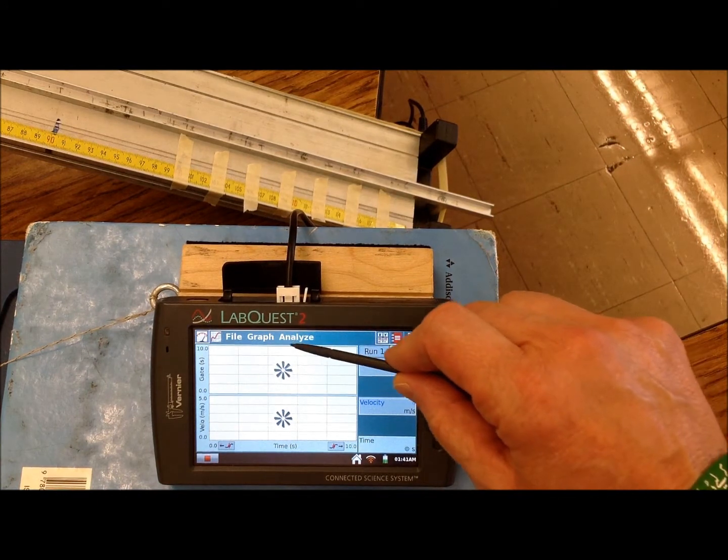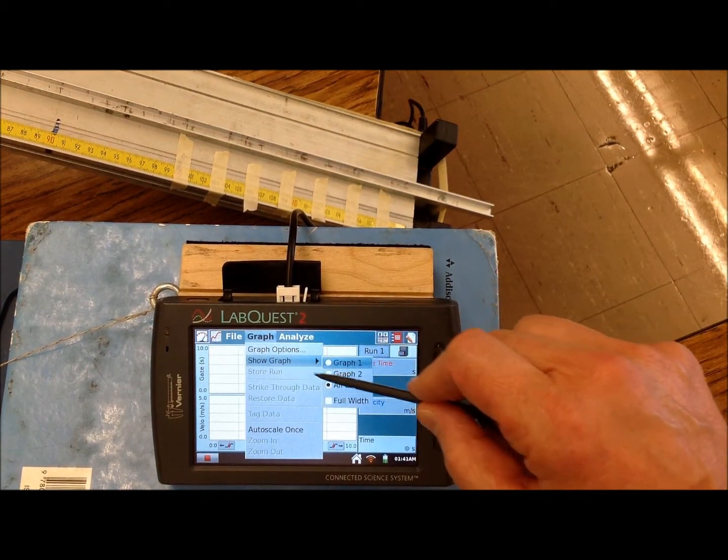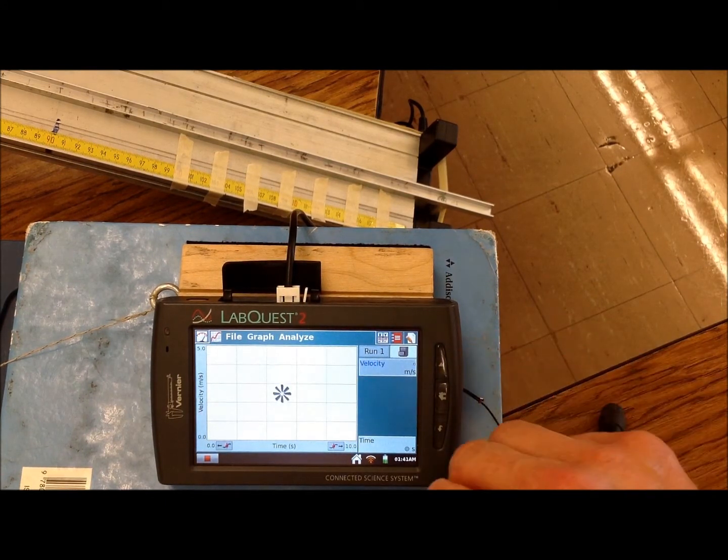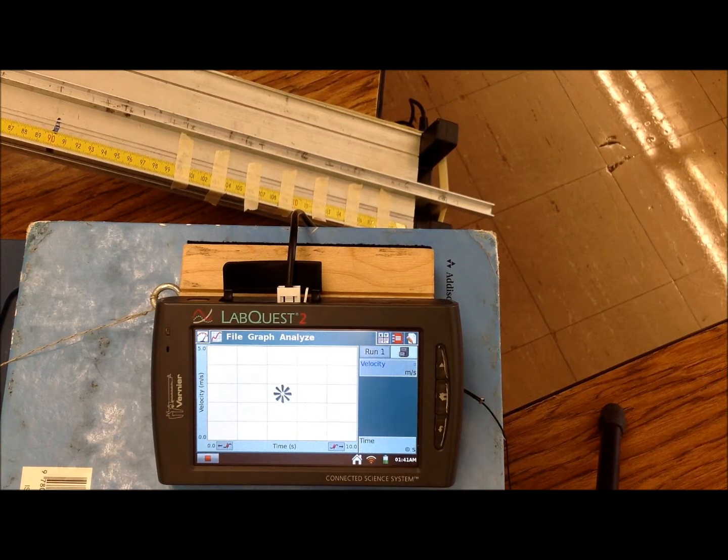Then all you have to do is you hit the play button. And we will only need one graph, so I'm going to go to graph. I'm going to show graph. I'm only going to show graph 2, because all I care about is the velocity. And I'm going to drop it through 5 times.